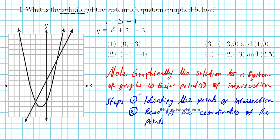The steps we will use to solve this problem: step number 1, we'll first identify the points of intersection. And then secondly, we will read off the coordinates of the points and that will be our solution. So let's take a look at this graph. We have an intersection here — let's call that point 1, our first intersection — and then we have another intersection here, point 2. The coordinates of these two points will be the solution to the system of equations.